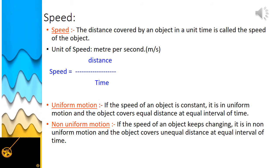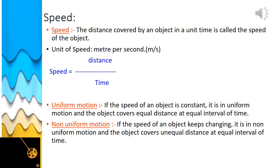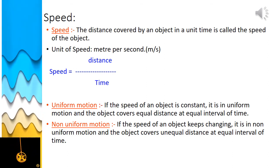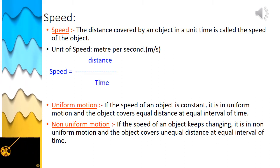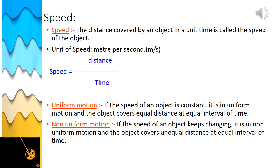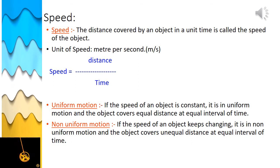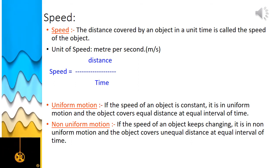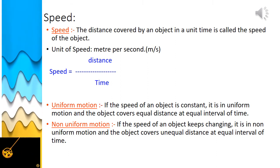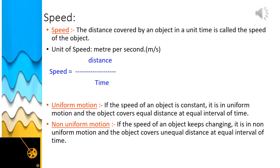When you go to school by bicycle it takes a long time, but when you go by school bus it takes much lesser time. A bus moves fast whereas a bicycle moves slow. An object which takes a longer time to cover a certain distance is said to be slow, whereas an object which takes a shorter time to cover the same distance is said to be fast. Even the same object may move fast at one time and slow at another — for example, a bus may move slowly on a busy road and faster on an empty road.